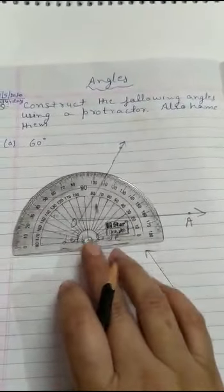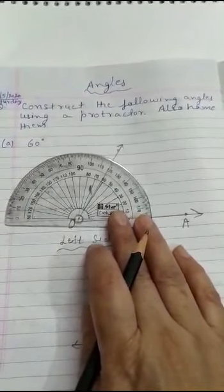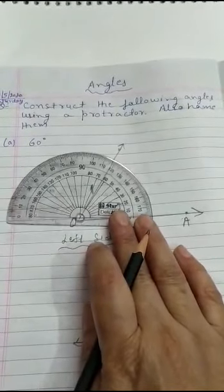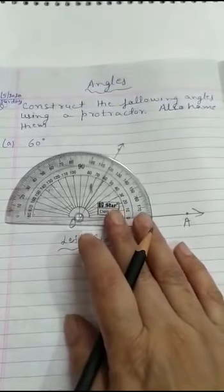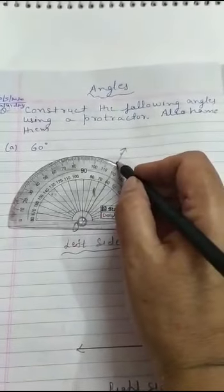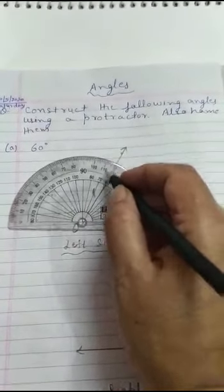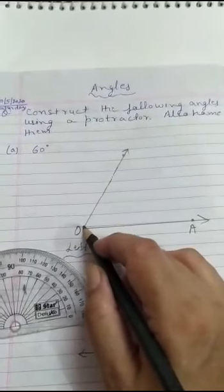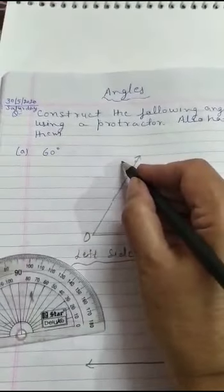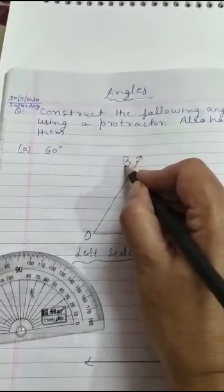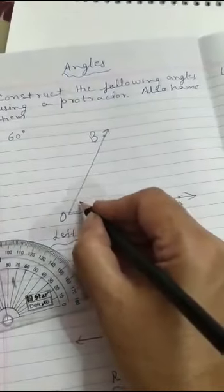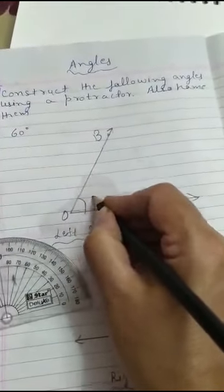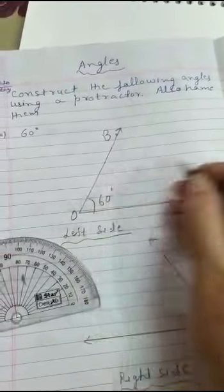We have put it here. We have marked it at 60. We have put it at 60. We have put it at this vertex. We have marked it as point B. We have made an angle. It is 60 degrees.